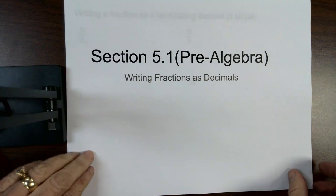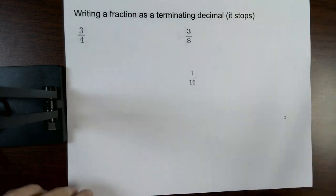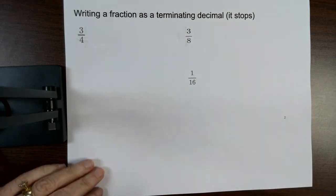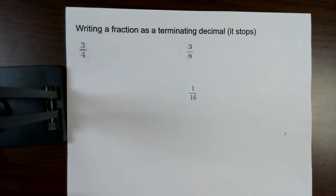Section 5-1 has to do with writing fractions as decimals. Writing a fraction as a terminating decimal means that when you write it as a decimal, that decimal is going to stop, it's going to finish, it's going to have a final point.